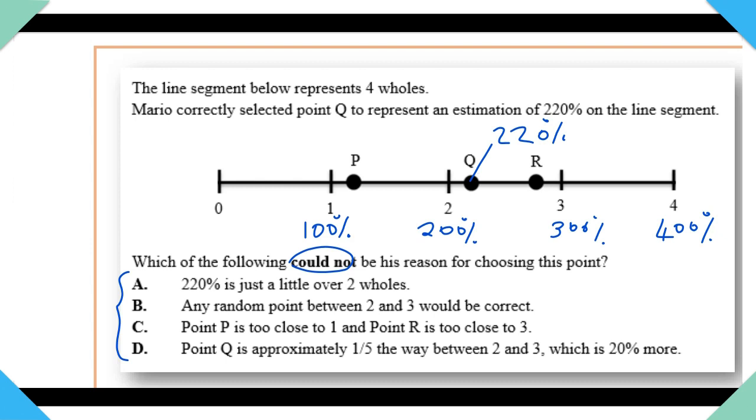Option B: Any random point between two and three would be correct. This is not correct, guys. And if you are not sure why this is not correct, just check out part one of this two-part video series. So here we have our answer. Our answer is B. We don't need to go any further because we found our answer. This one is not true.